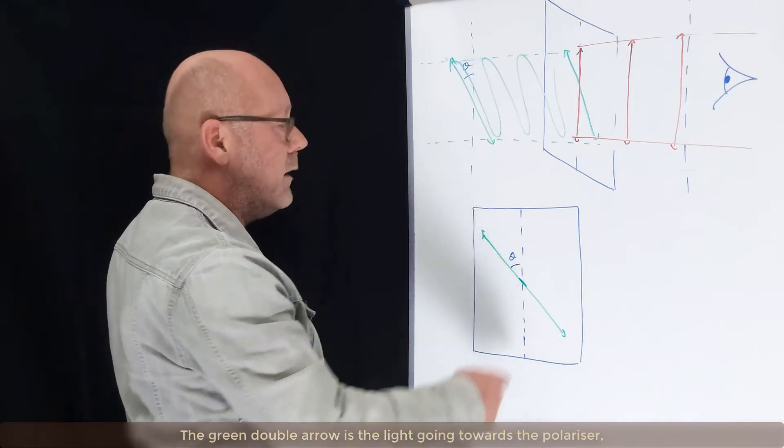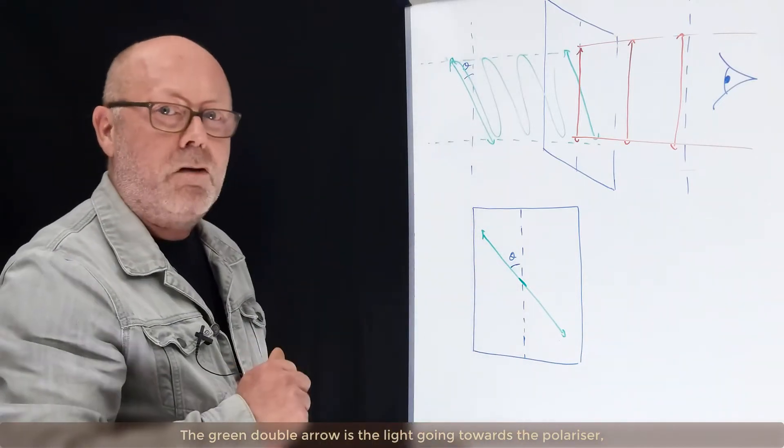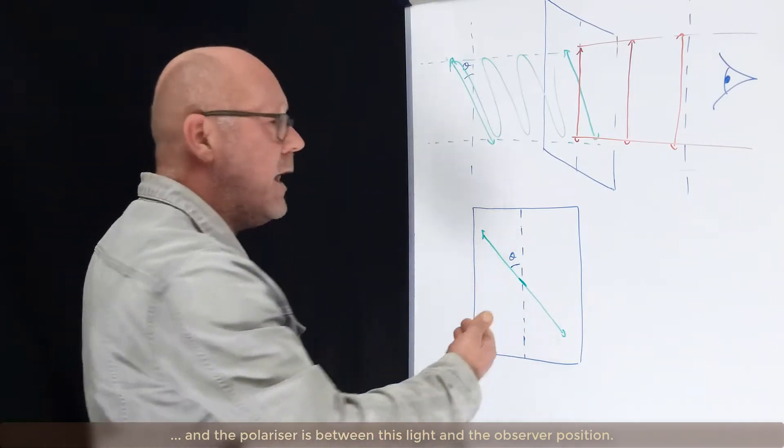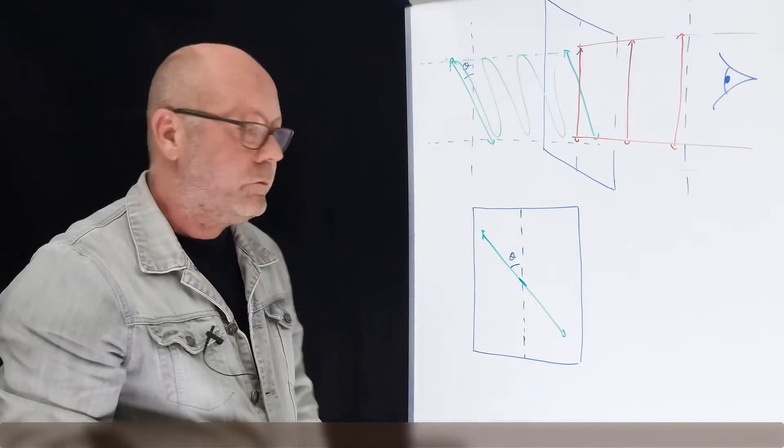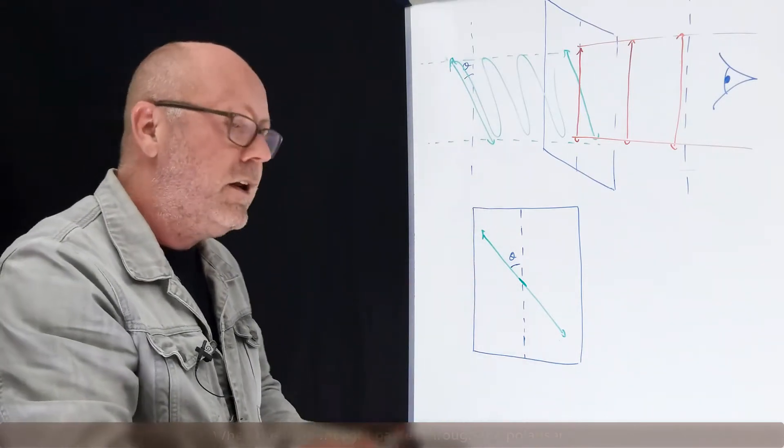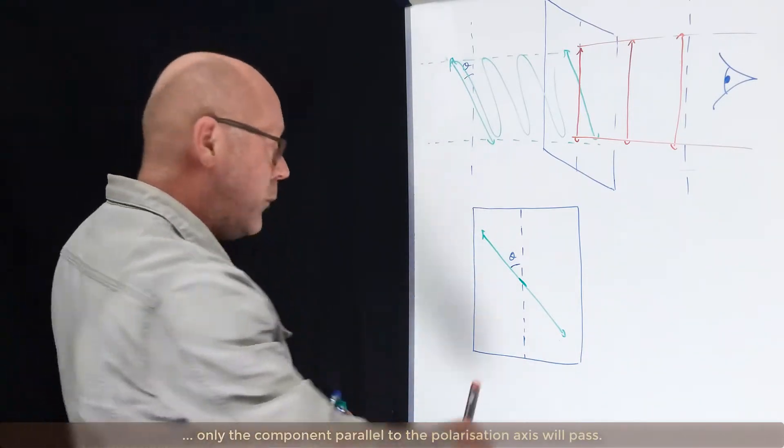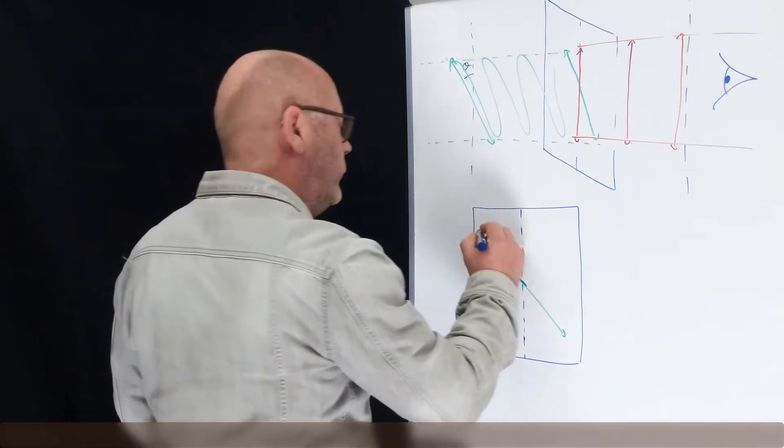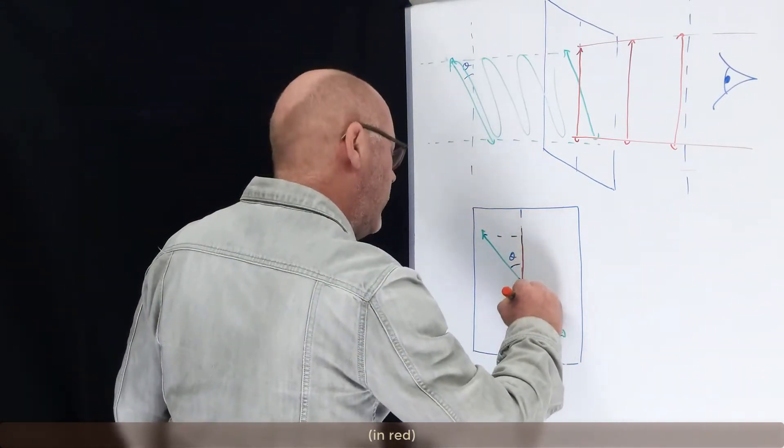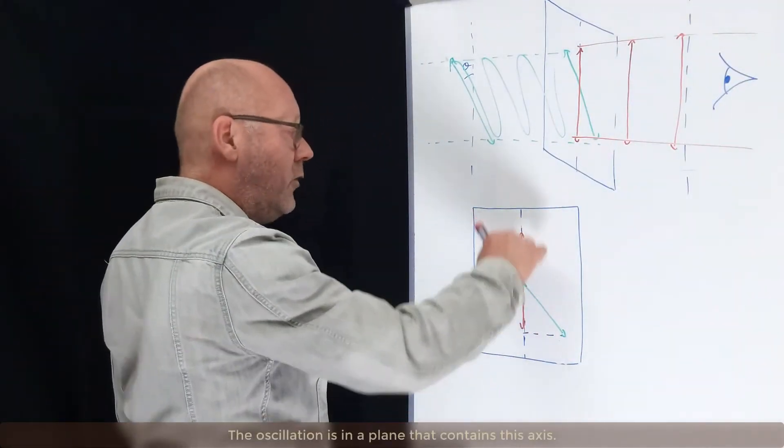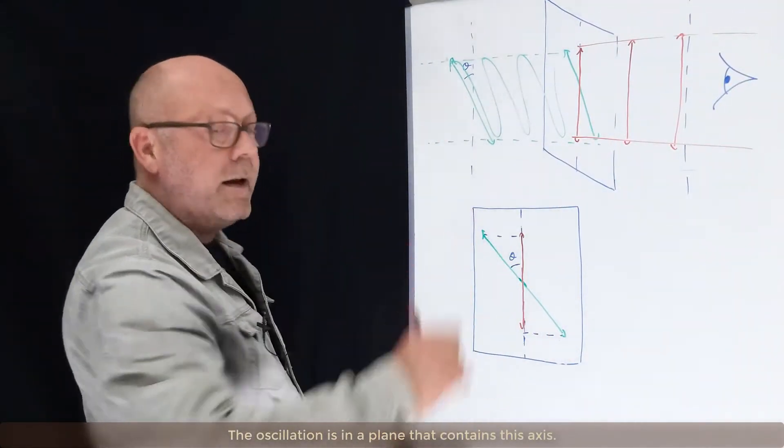The green double arrow here is the light going towards the polarizer. And the polarizer is between this light and the observer position. So when this green light passes through the polarizer, only the component parallel to the polarization axis of the polarizer will pass. So this, in red, which is the light coming out here. Now the oscillation is in a plane that contains this axis.